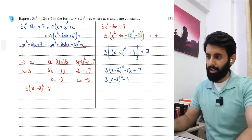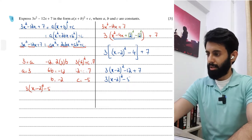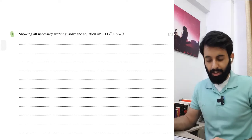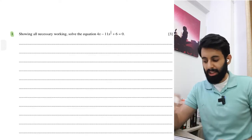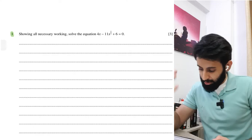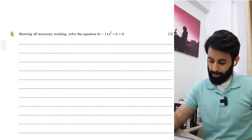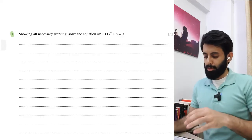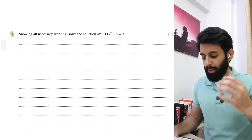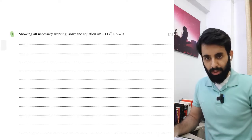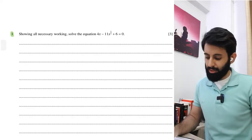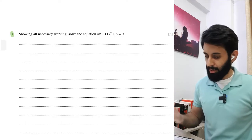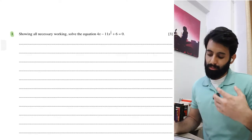Now for disguised quadratics - the name is self-explanatory, it's an equation disguised as a quadratic. The equation is 4x - 11x^(1/2) + 6 = 0. This is not a standard quadratic because we have x power 1 and x power 1/2. A usual quadratic has x², x, and a constant. Since the problem term is x to the power half, we substitute: let x^(1/2) = a.